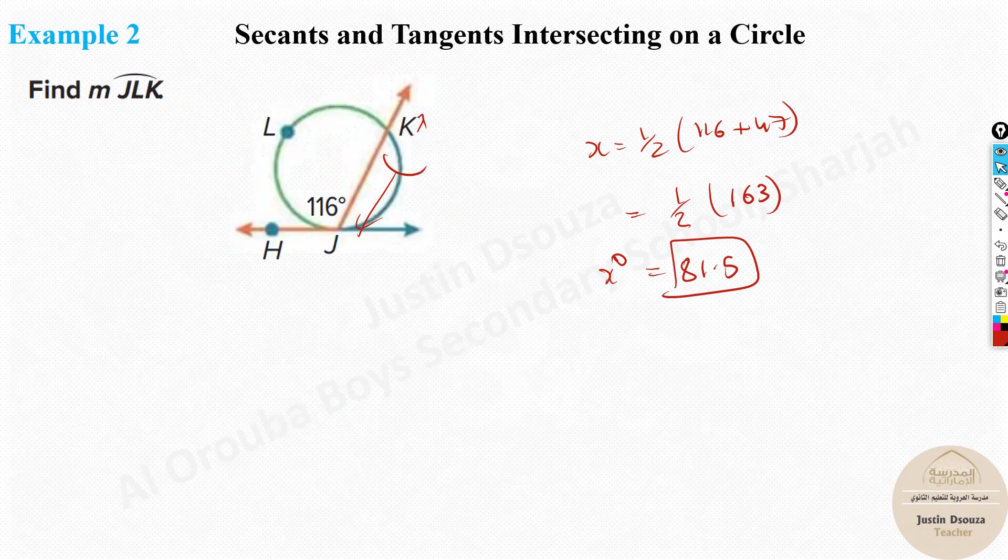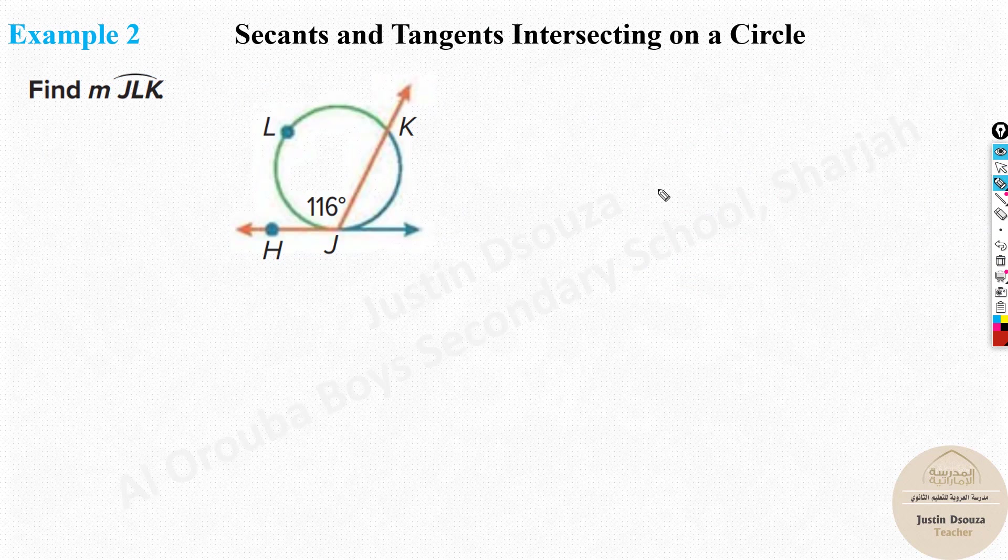Now, the second type of problem, remember the second theorem, which is the easy one. All you need to know is this angle will be the half of the arc. So we have been told here, find MLJ, this arc over here. And looking at it, you know, this is a secant line and this is a tangent line. So, and it's intersecting at the point of tangency. How would you apply the theorem?